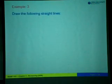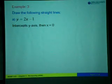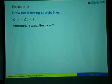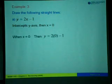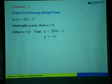Example 3: draw the following straight lines. In order to draw the line y equals to 2x minus 1, the first step is to find the y-axis intercept, which occurs when x is equal to 0. We substitute x equals 0 into the equation y equals 2x minus 1. So when x is 0, then y will be 2 times 0 minus 1, which gives us negative 1. So the y-intercept equals negative 1.